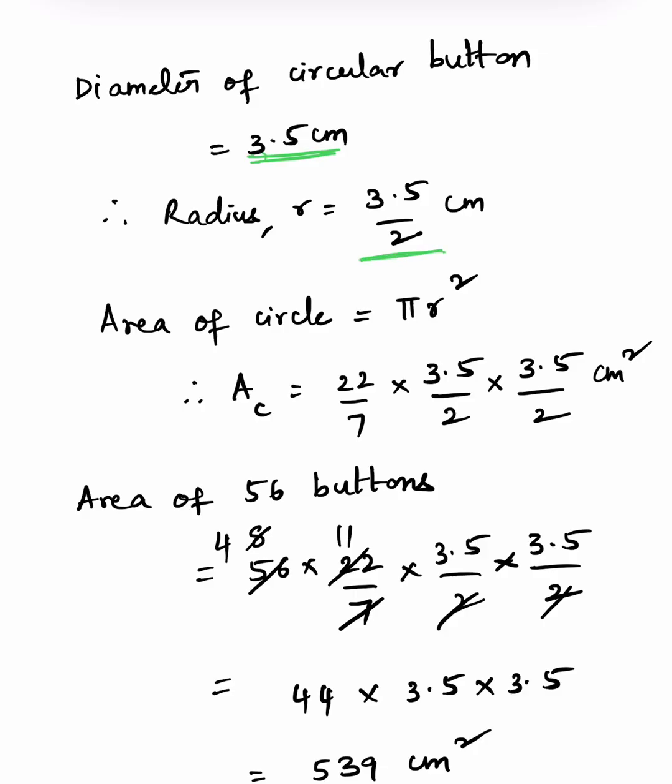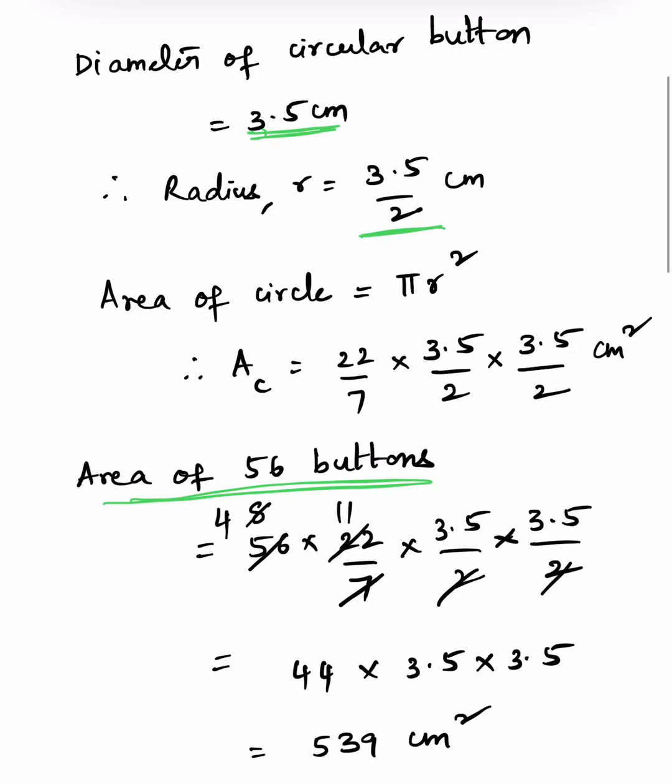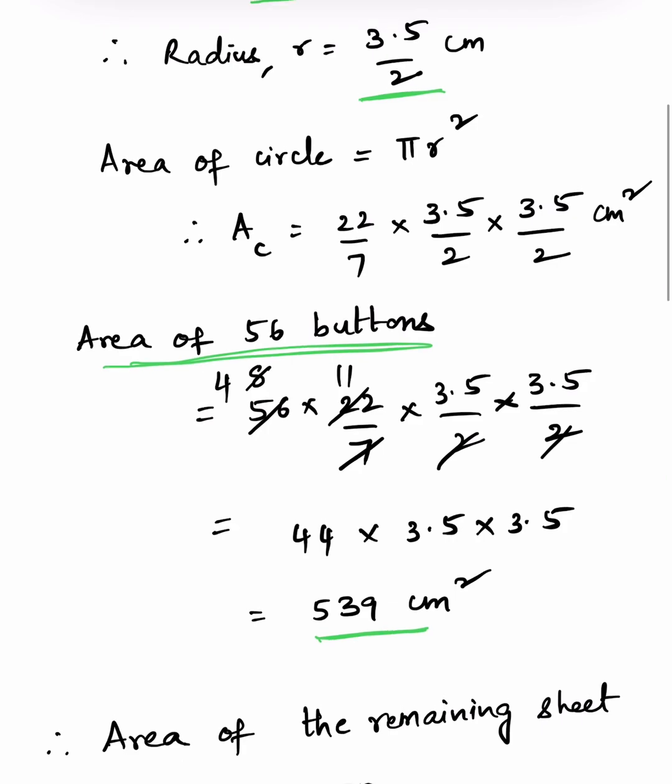So area of 56 buttons will be 56 into this, so 56 into 22 by 7 into 3.5 by 2 into 3.5 by 2, which is equal to 539 cm square. This is the area of 56 buttons.